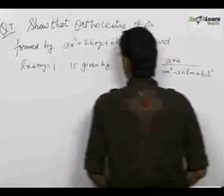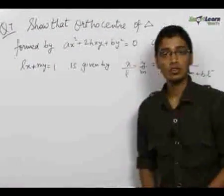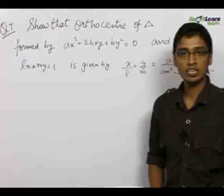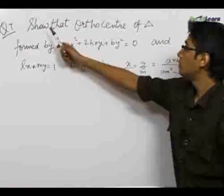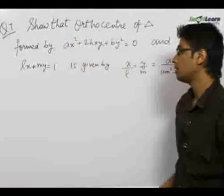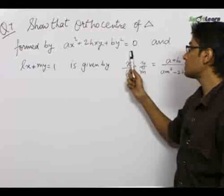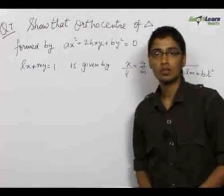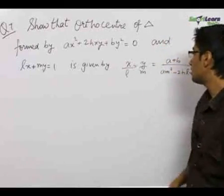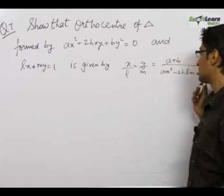The next question is an important problem which involves concepts of straight lines as well as pair of straight lines. We have to show that the orthocenter of the triangle which is formed by these two lines and the line Lx plus My equals 1 is given by x by L equals y by m equals this expression.